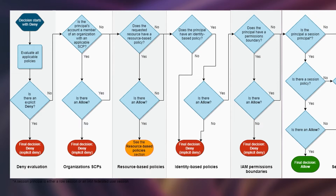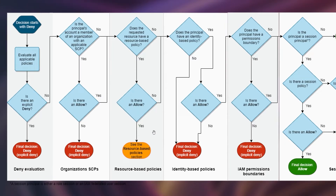If there is an allow in the SCP, or if the SCP condition doesn't apply, it moves to the next check: does the request resource have a resource-based policy? If there is a resource-based policy and it has an allow, the resource-based policy determines how access is granted. If there is no allow and no resource-based policy, it checks whether the principal has an identity-based policy attached to the user, group, or role.